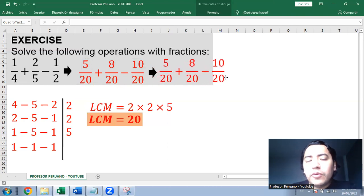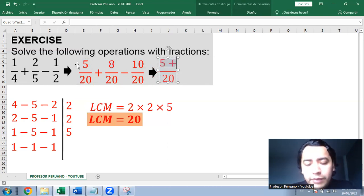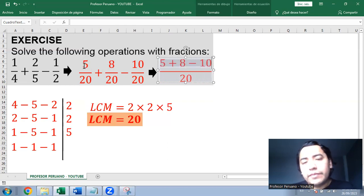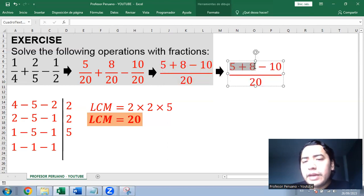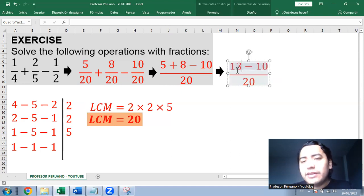So that means we can make the operation directly. So it's 5 plus 8 minus 10. So we continue doing the operation at the numerator. 5 plus 8 is 13, and 13 minus 10 is equal to 3.